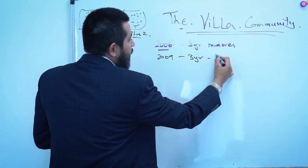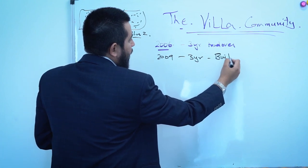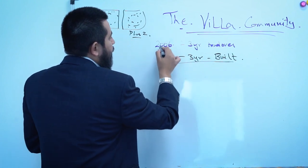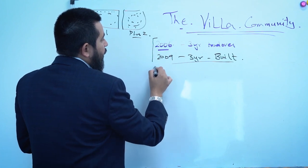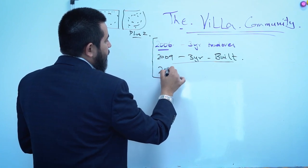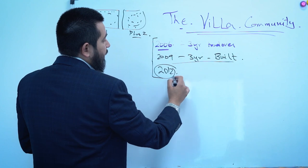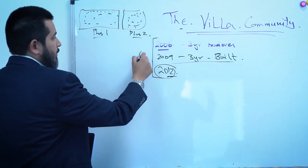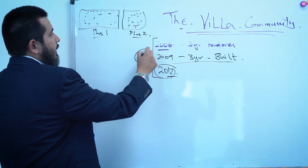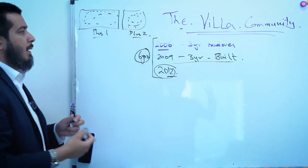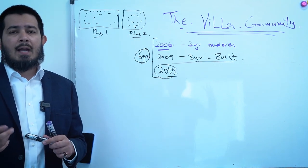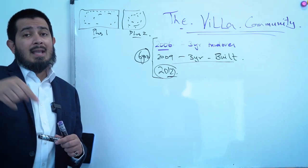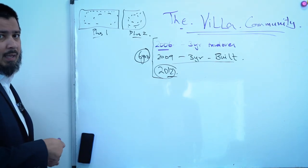And then by 2009 you had another three years to fully build your villa. So essentially speaking, if you bought a plot in 2006, you had all the way to 2012 to build it. This was the completion date. You had six years, which was great. People could build it, hold them, flip them, tons of fun to be had.